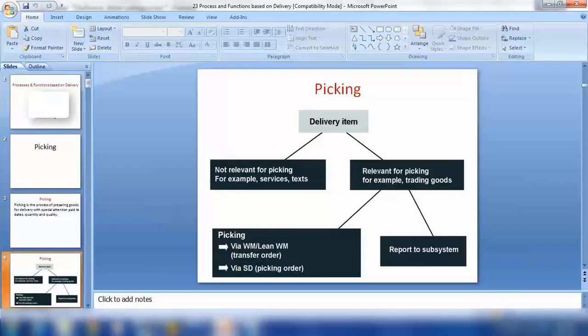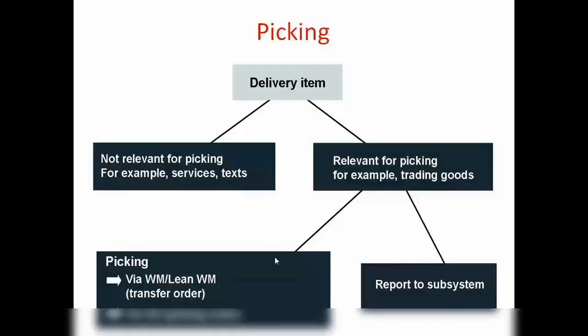Physical goods and trading goods are relevant for picking. What is not relevant for picking would be text items or any services being provided, since those are not physical goods. Everything else — physical goods — will be relevant for picking.